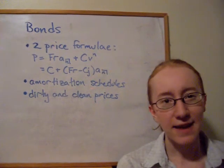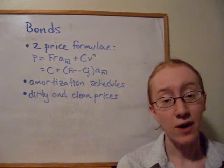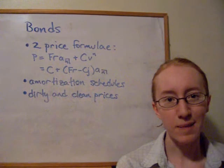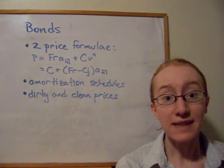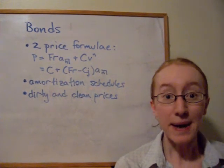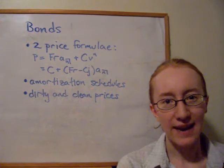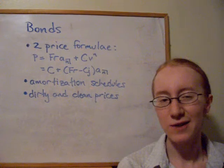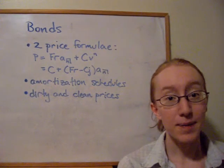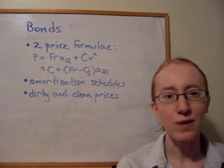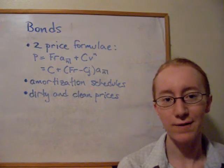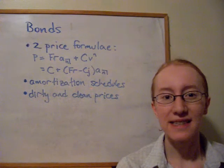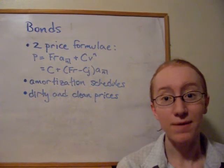There's a problem with the dirty price, though: it has discontinuities at the coupon payment times. One second before a coupon is paid, the price includes that coupon; one second after it's been paid, it no longer does. So we came up with three different methods to smooth out that function and produce a nice, smooth curve — or smooth set of disjoint lines — known as the clean prices kept on the books for the bond's book value.